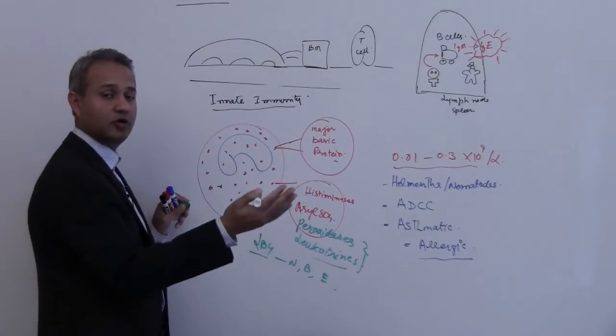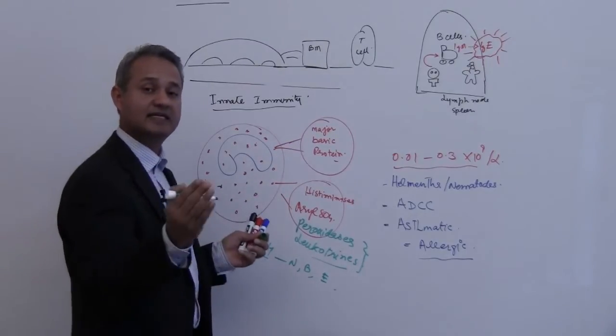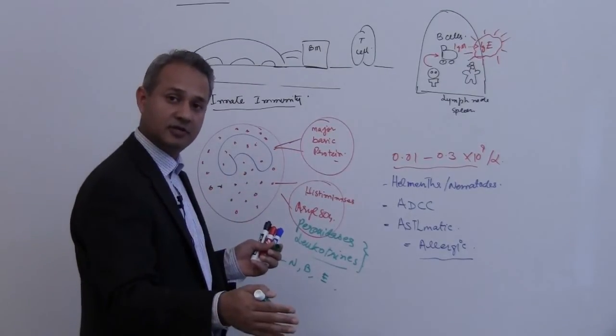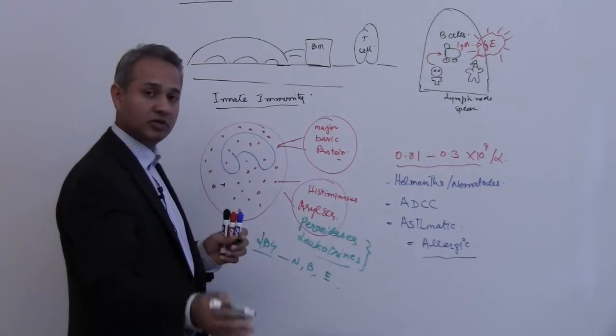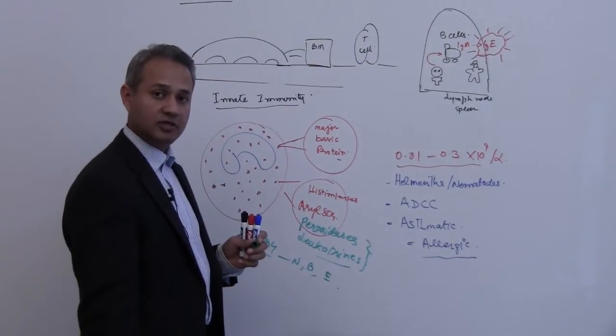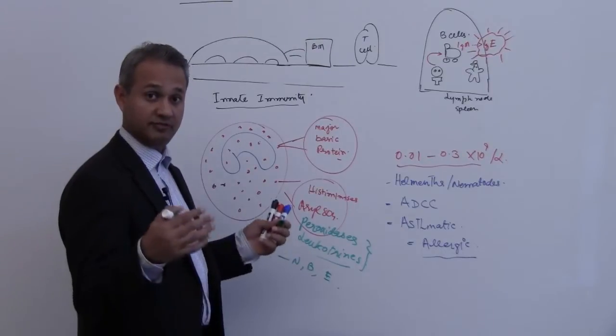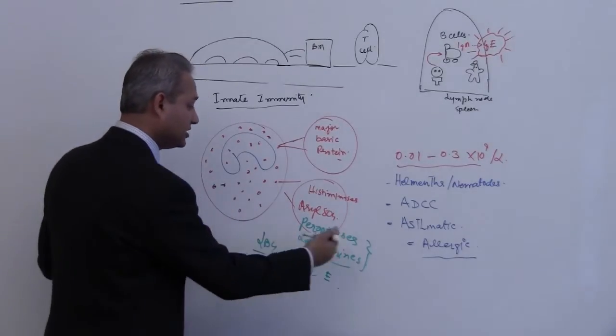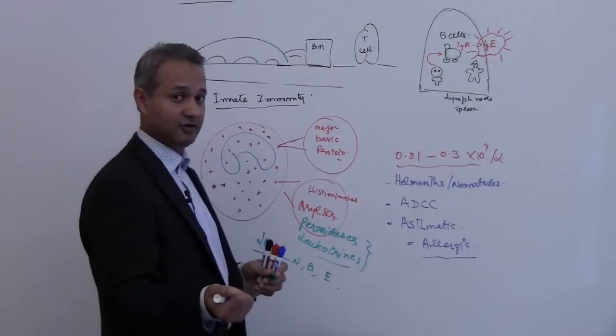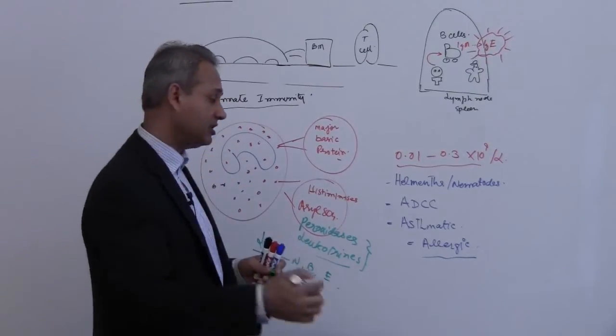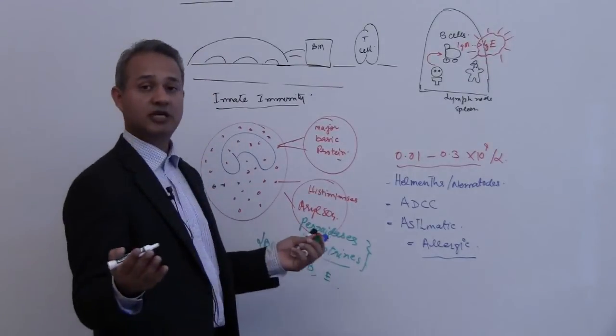So if you give more leukotriene, what is that going to do? Increase inflammation, right. Similarly, peroxidases are going to cause tissue damage. Myeloperoxidase is a very big thing for the leukotriene. So peroxidases are going to make reactive oxygen species which are going to cause tissue damage which in turn is going to cause inflammation.